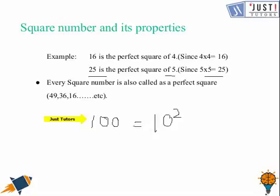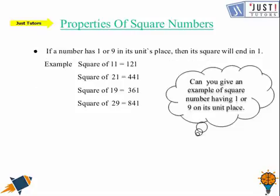These all are perfect squares. Now let us see this property of square numbers. If a number has 1 or 9 in its unit's place then its square will end in 1. Here square of 11 is 121, square of 21 is 441, square of 19 is 361.